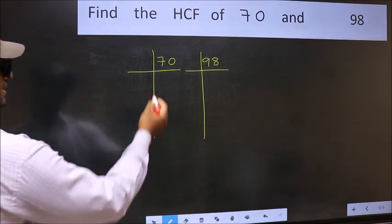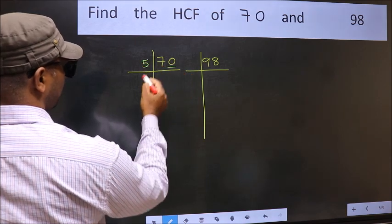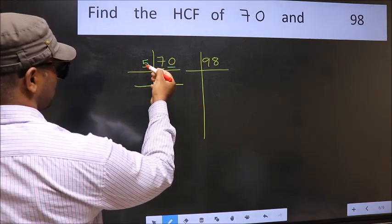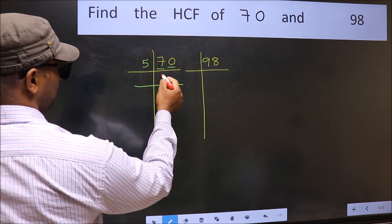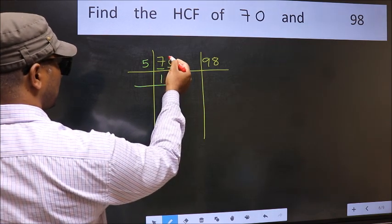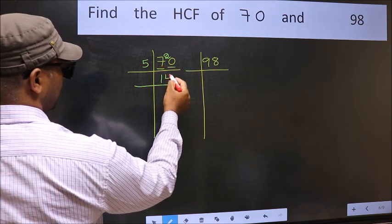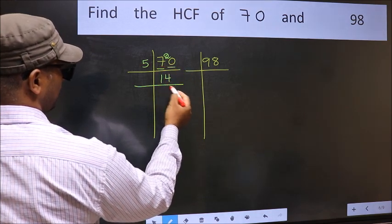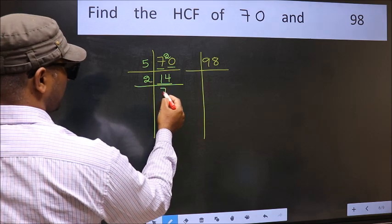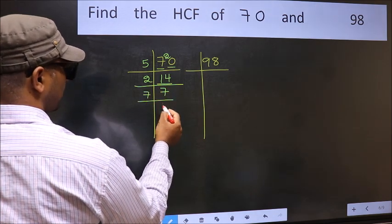For the first number 70, the last digit is 0 so we divide by 5. The first digit is 7; a number close to 7 in the 5 times table is 5 once 5. 7 minus 5 is 2, carried forward to give 20. We get 20 in the 5 table as 5 fours 20. Now we have 14, which is 2 sevens. Since 7 is a prime number, 7 once 7.